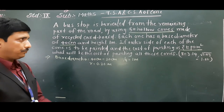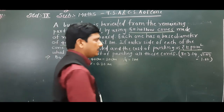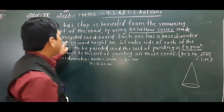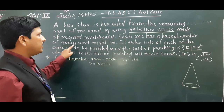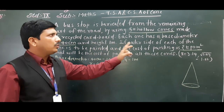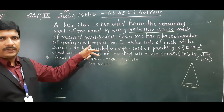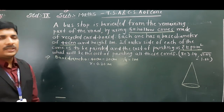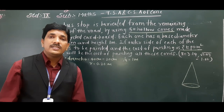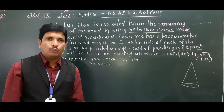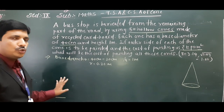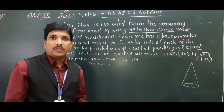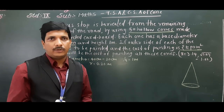We have to find the curved surface area. The cone is hollow, and the outer side of each cone is to be painted. We use the formula CSA = π r l (pi r l). We have the radius, but we don't have the slant height l, so we need to find the slant height.